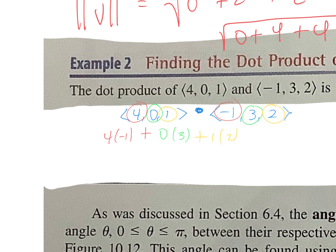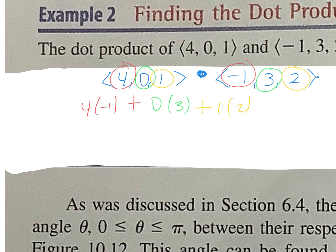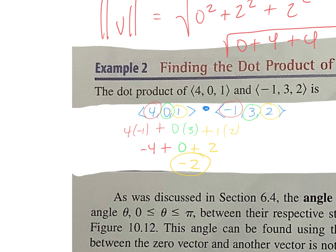So when you simplify this, guys, what's 4 times negative 1? Negative 4. Plus what's 0 times 3? 0. Plus what's 1 times 2? 2. Now negative 4 plus 0 plus 2 is negative 2. Perfect. Questions? This is coming back a little bit.